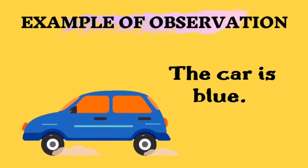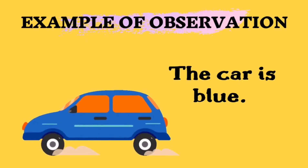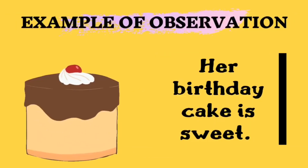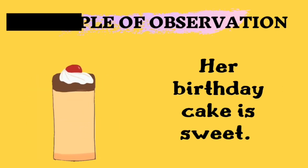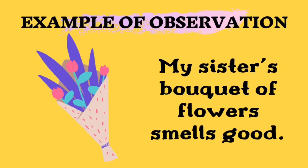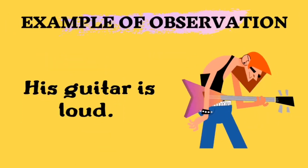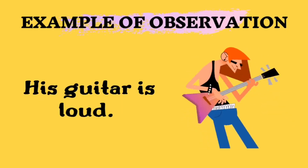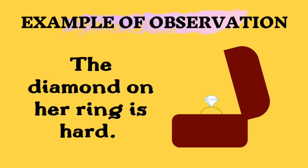Here are some examples of observation. When you see that the car is blue, you will describe it as a blue car. Upon tasting a cake, you will say her birthday cake is sweet. When you smell flowers, you might say my sister's bouquet of flowers smells good. When there is loudness, you might describe it that this guitar is loud. By touching things, you might say that the diamond on her ring is hard.